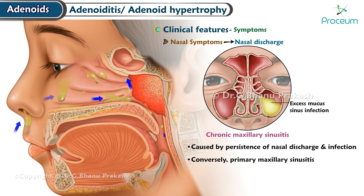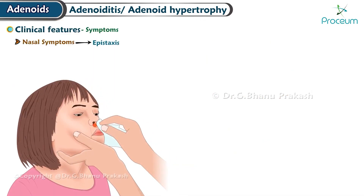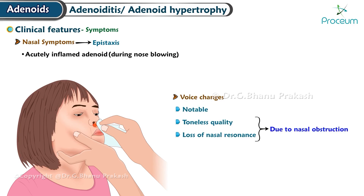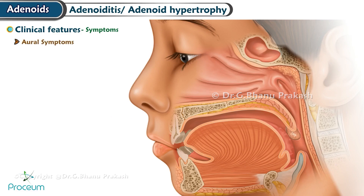Conversely, primary maxillary sinusitis can lead to infected and enlarged adenoids. Epistaxis may occur when the adenoids are acutely inflamed, particularly during nose blowing. Voice changes are notable, characterized by a toneless quality and a loss of nasal resonance due to nasal obstruction. Oral symptoms — tubal obstruction: enlarged adenoids can block the Eustachian tube, resulting in a retracted tympanic membrane and conductive hearing loss.